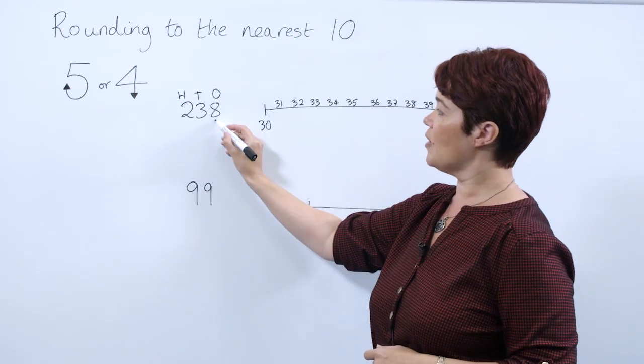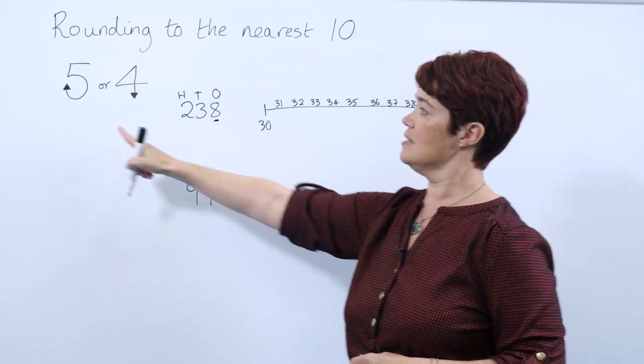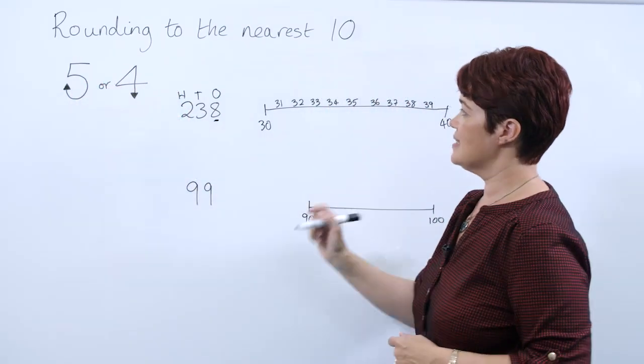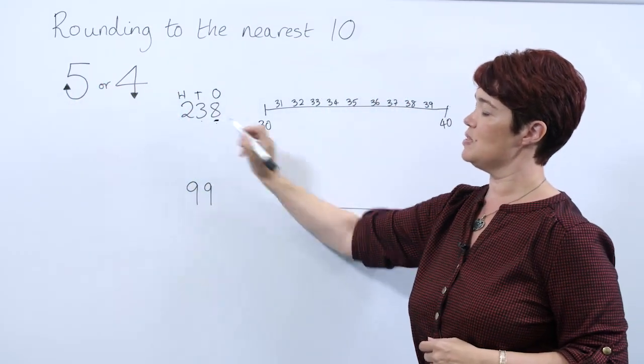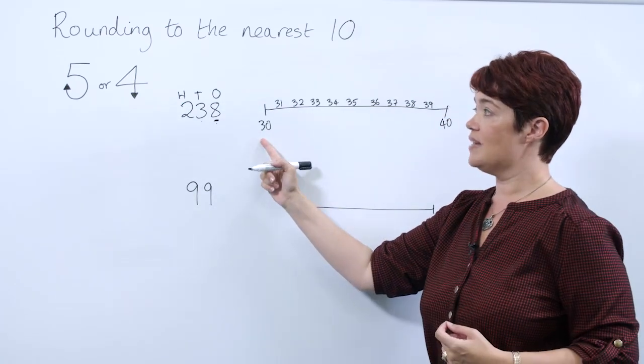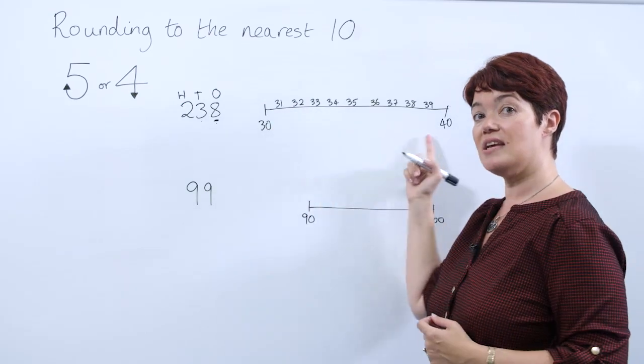So we look at our ones column. We can see it's an eight. That's bigger than five, so we're going to round up. Now we need to decide which of our tens this is between. Using the knowledge of multiples of 10, hopefully we can see that it's between 30 and 40.